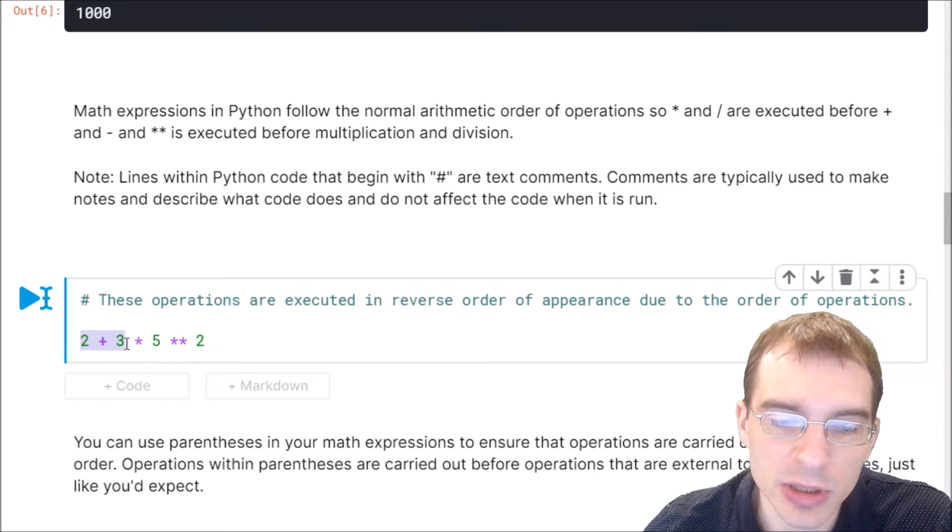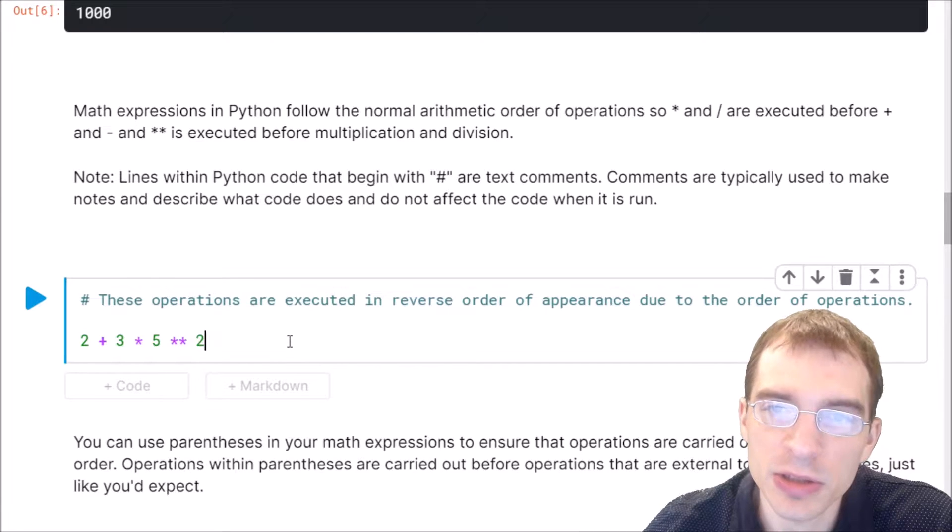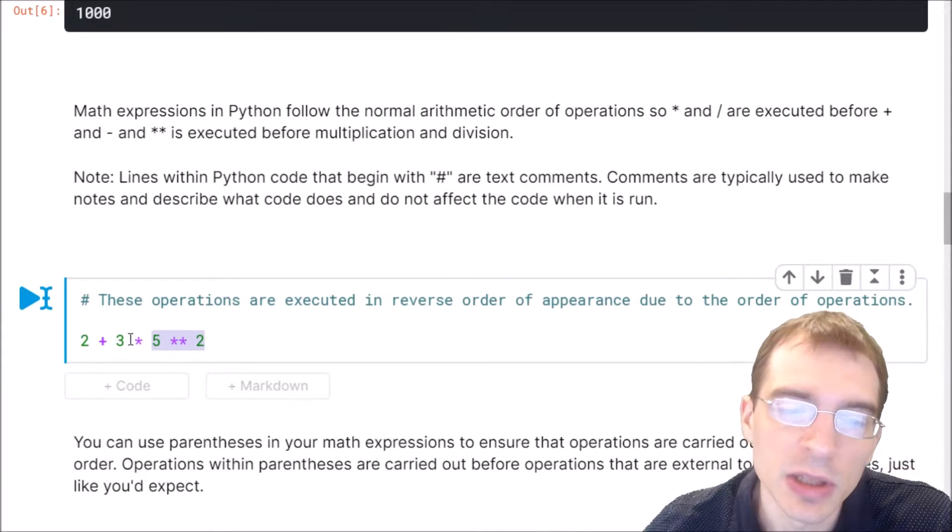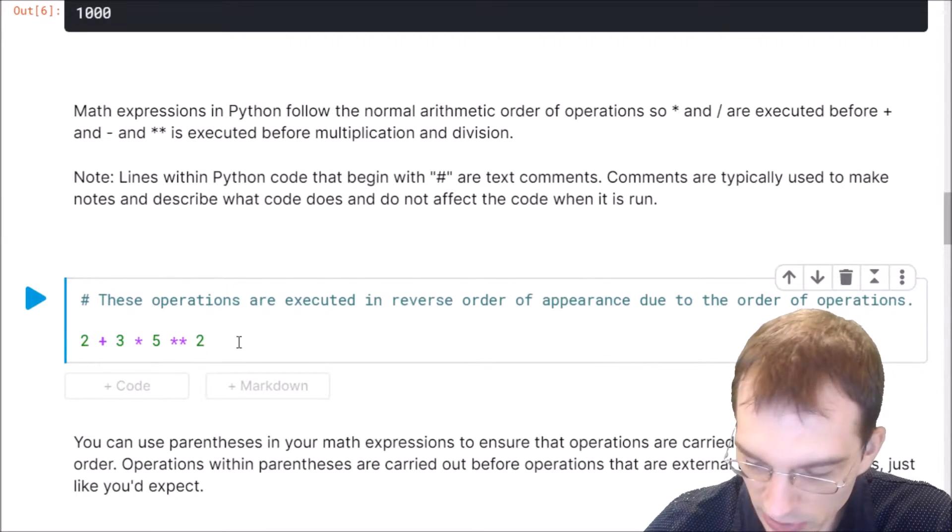Even though it says 2 plus 3 times 5 to the second power, the order that they're executed in is actually this will happen first: 5 to the second power, so we'll get 25. Then that will be multiplied by 3, so we'll get 75. And then we'll add 2 to that, so we should get 77 here.